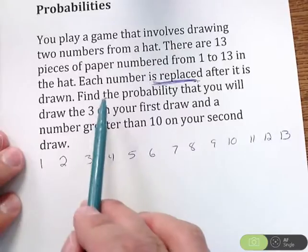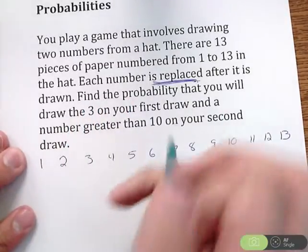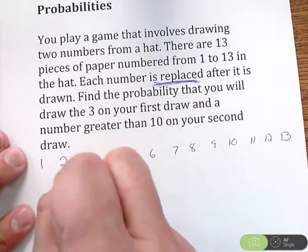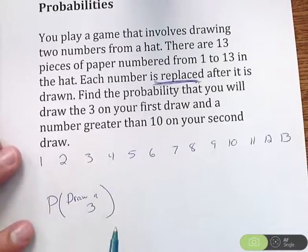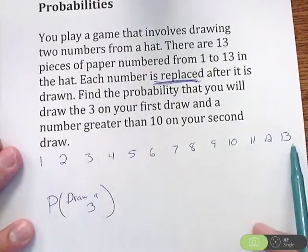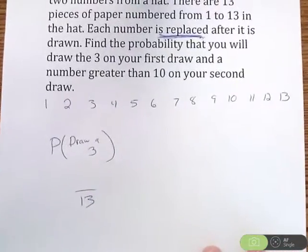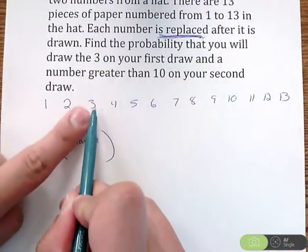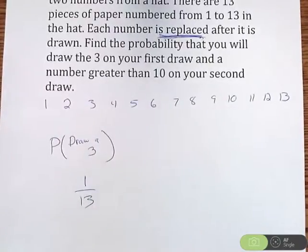So what we're going to do is start off. The first thing it says is find the probability that you will draw a three on your first draw. So what's the probability that we draw a three? Well, there's 13 total options here, so I know this is over 13. How many different ways can I draw a three? Well, there's only one three available, so that is a 1 in 13 chance you're going to draw that three.